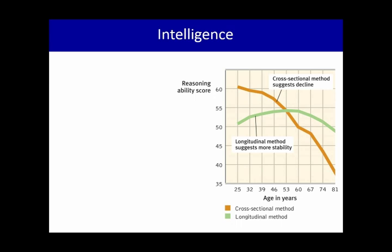You see the ages, right? 25, 32, 39, and so on up to 81 years old. Then if we look at the y-axis, we see the reasoning ability score, and this is an intelligence test. The scores range from 35 on the low end and 60 on the high end.